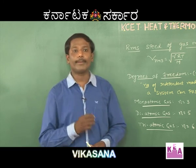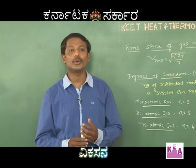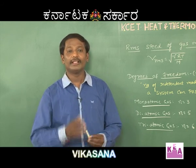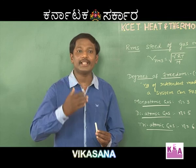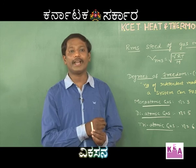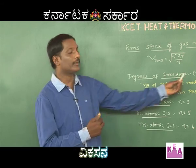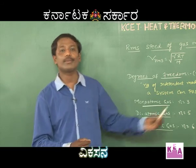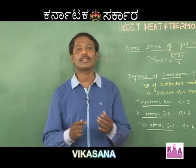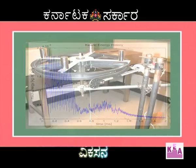When you supply energy to the gas molecules, in how many modes is that energy going to be stored? The different modes in which energy is stored in the system are given by a parameter called degrees of freedom. Degrees of freedom represents the number of independent variables or independent modes in which a system can possess energy — either translational, vibrational, or rotational.